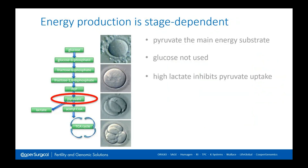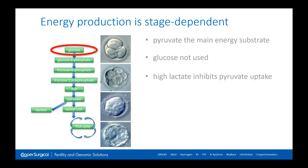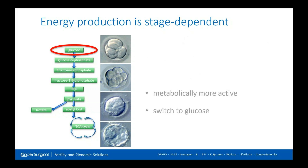Looking at energy needs, in the early stages the primary energy source for embryos is pyruvate through the TCA cycle, and the embryo typically would not be using glucose as an energy substrate. It's important not to have high lactate levels in the culture medium, as this may push the embryo into deriving energy via glycolysis, which would not be physiological at that stage. As the embryo develops and transcribes its own genes, there's an increased demand for energy reflected by a switch to glucose as the primary energy substrate. Single step media must find a balance between glucose, pyruvate, and lactate.